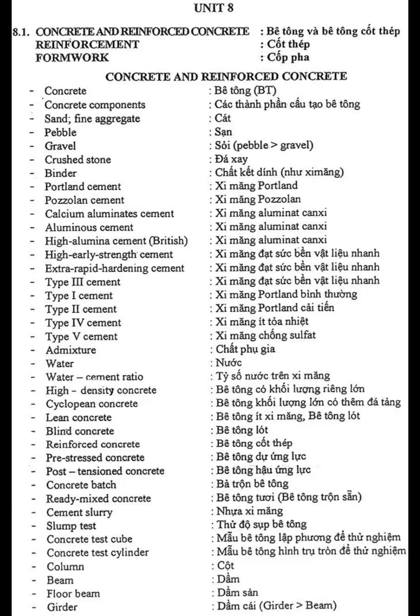Cement: Extra Rapid Hardening Cement, Type 3, Type 1, Type 2, Type 4, Type 5 Cement. Admixture. Water. Water-Cement Ratio. High Density Concrete, Cyclopean Concrete, Lean Concrete, Blind Concrete, Reinforced Concrete, Pre-stressed Concrete, Post-Tensioned Concrete. Concrete Batch, Ready-Mixed Concrete, Cement Slurry, Slump Test, Concrete Test Cube, Concrete Test Cylinder. Column.